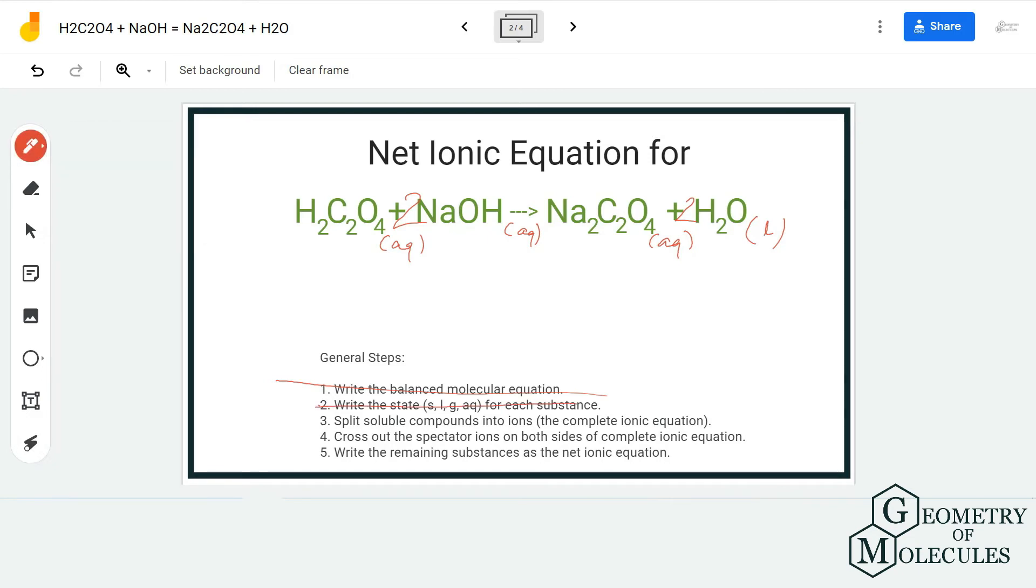H₂C₂O₄ will be written as it is because, as I mentioned, it will not dissociate in water. NaOH will dissociate and you have to write the ions for it, so it will be 2Na⁺ and 2OH⁻. Similarly, you have to write the ions for this compound as well.